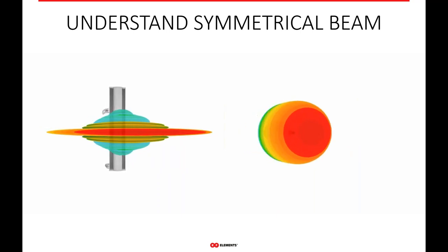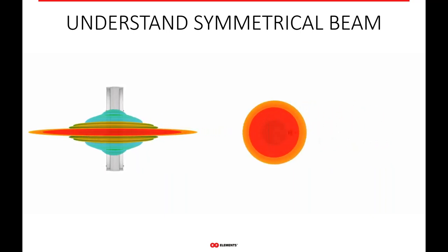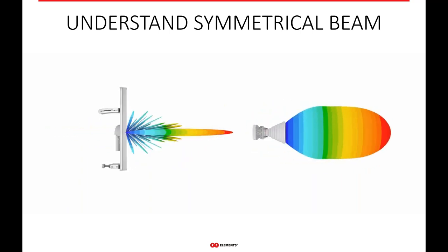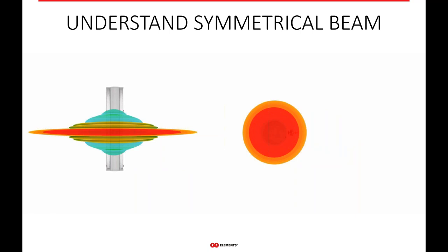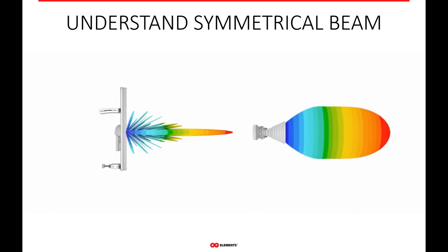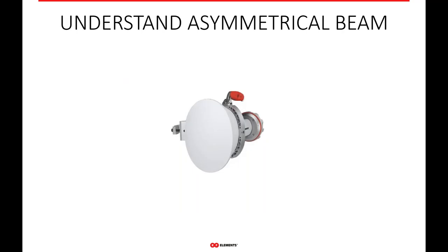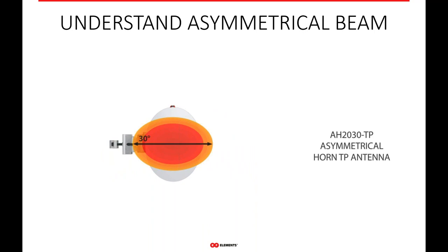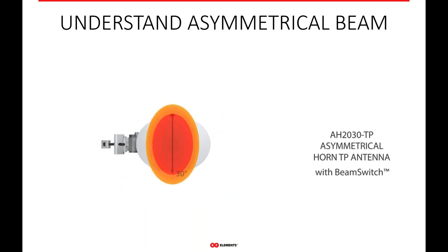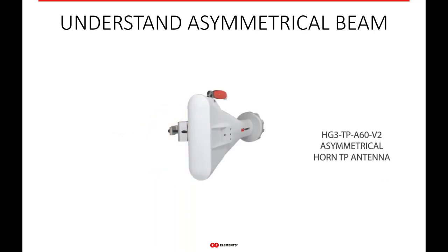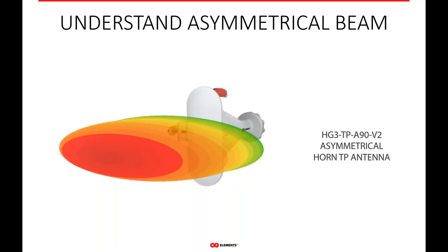Horn antennas have a unique beam shape. Symmetrical horns have a symmetrical pattern, meaning the antenna is just as wide as it is tall — the vertical and horizontal beam widths are the same. This is very different from a traditional sector, and a lot of people don't understand why they perform the way they do when they first look at horns. Many of our antennas also have an asymmetrical beam, where it's wider in one cut versus the other — so it could be 30 degrees wide and 20 degrees tall, or vice versa. Understanding the differences between these antennas and their correlation of gain is really important.